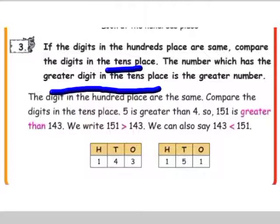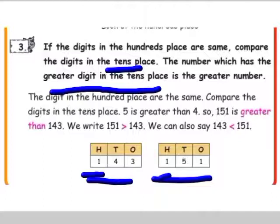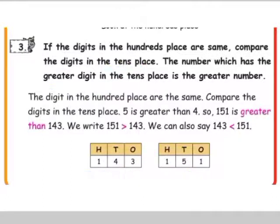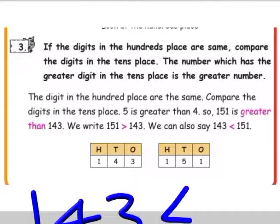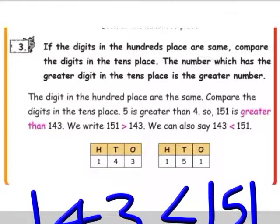For example, 143 and 151. The hundreds place digits are the same, so we look at the tens place. In 143 the tens digit is 4, and in 151 the tens digit is 5. Since 5 is greater than 4, 151 is greater than 143. So 143 is less than 151, or 151 is greater than 143.